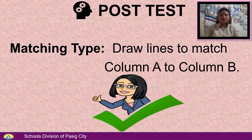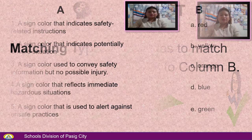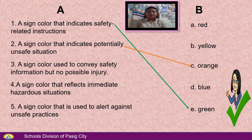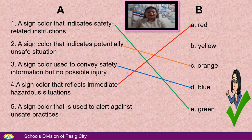Post test — Matching type: Draw lines to match column A to column B. Number 1: A sign color that indicates safety-related instructions — Green. Number 2: A sign color that indicates potentially unsafe situation — Orange. Number 3: A sign color used to convey safety information but no possible injury — Blue. Number 4: A sign color that reflects immediate hazardous situations — Red. Number 5: A sign color that is used to alert against unsafe practices — Yellow. That's all for today. Thank you, keep safe, and may God always bless you all. See you next time.